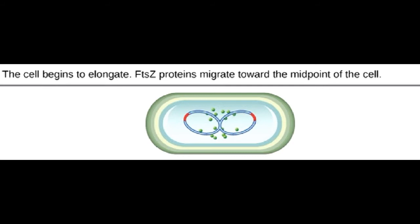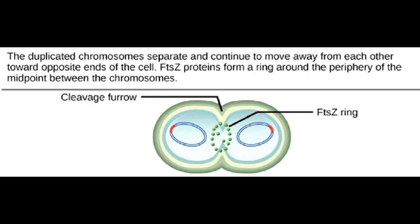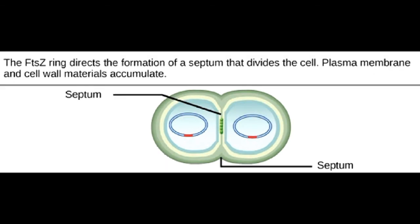As the cell elongates, the growing membrane aids in the transport of the chromosomes. After the chromosomes have cleared the midpoint of the elongated cell, cytoplasmic separation begins.